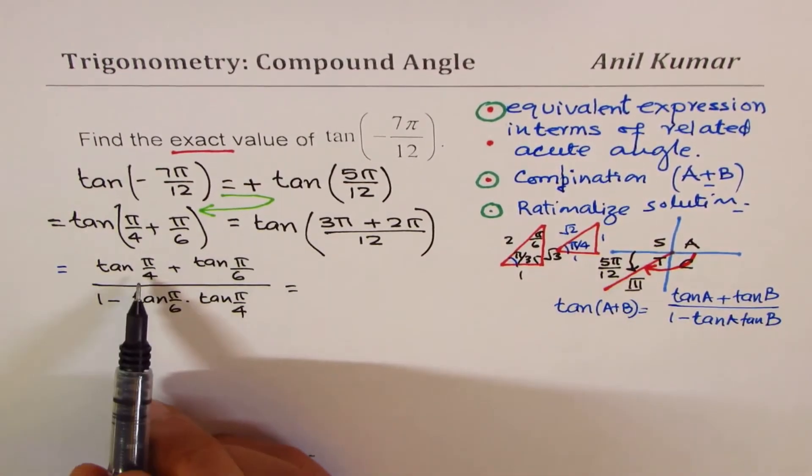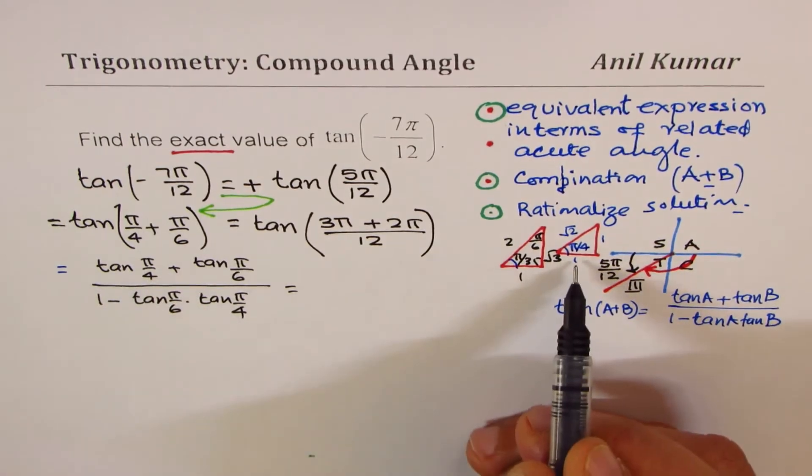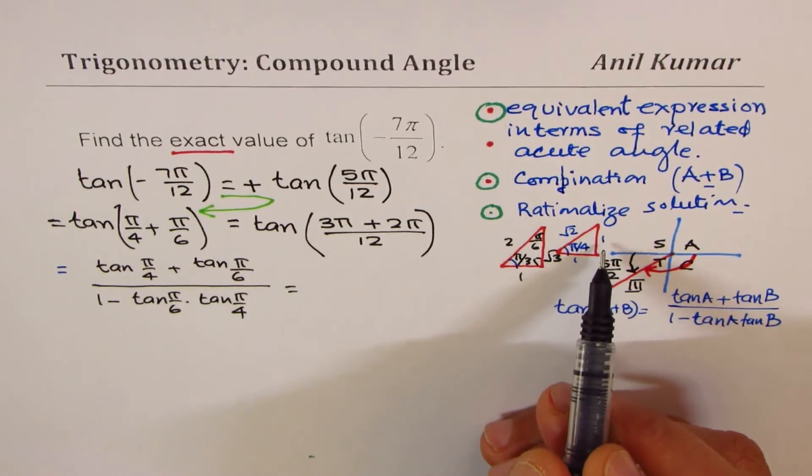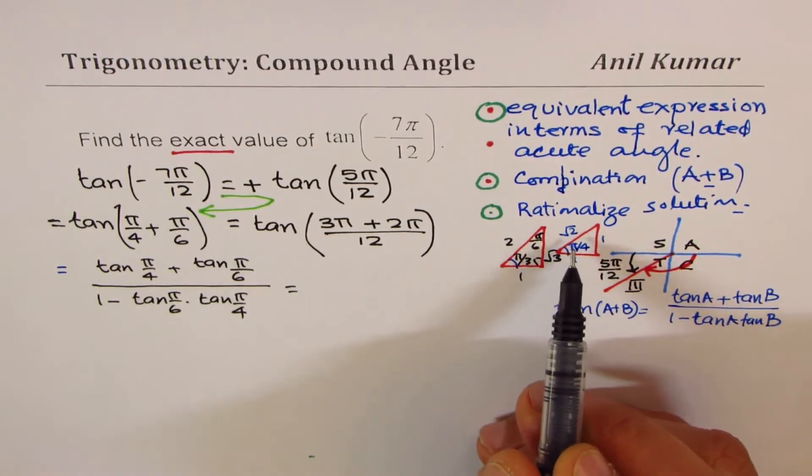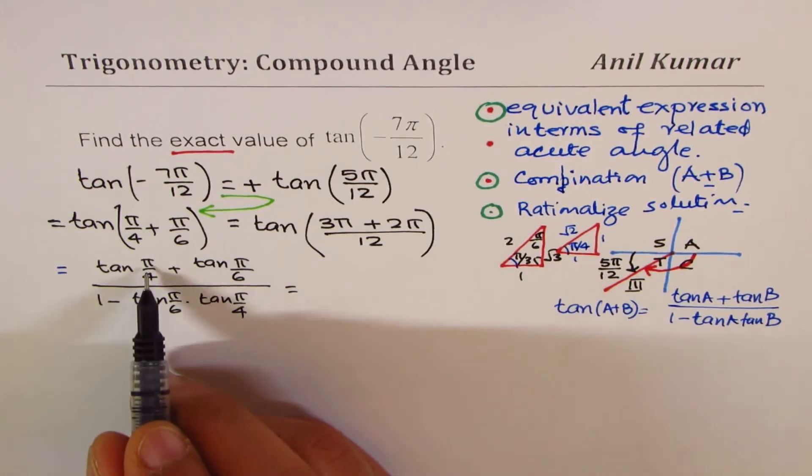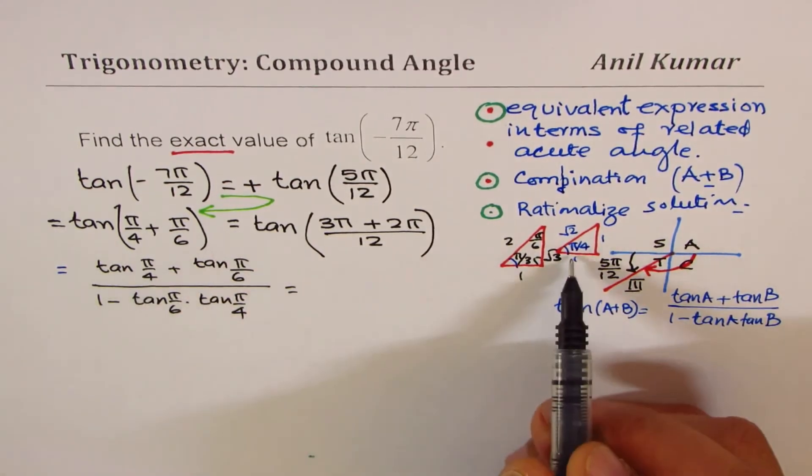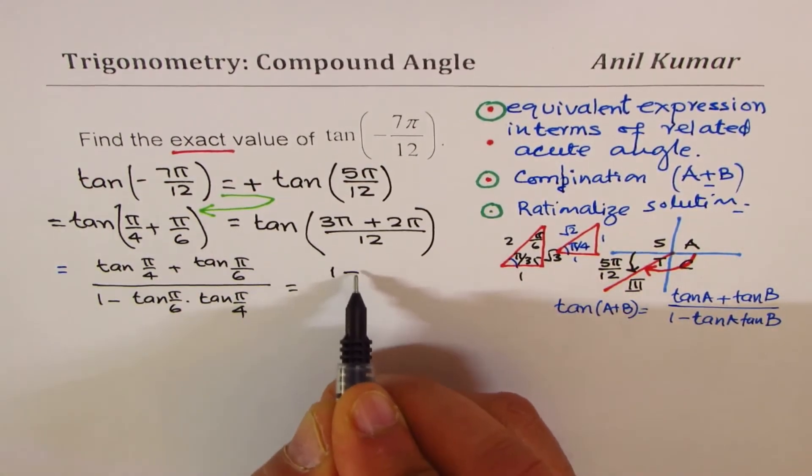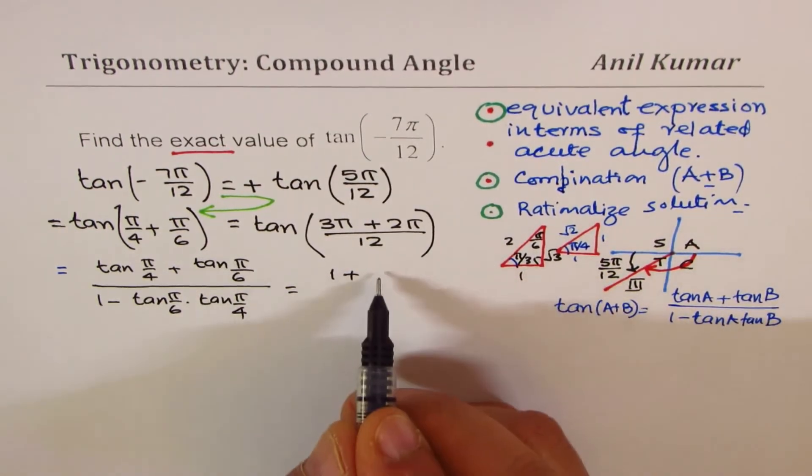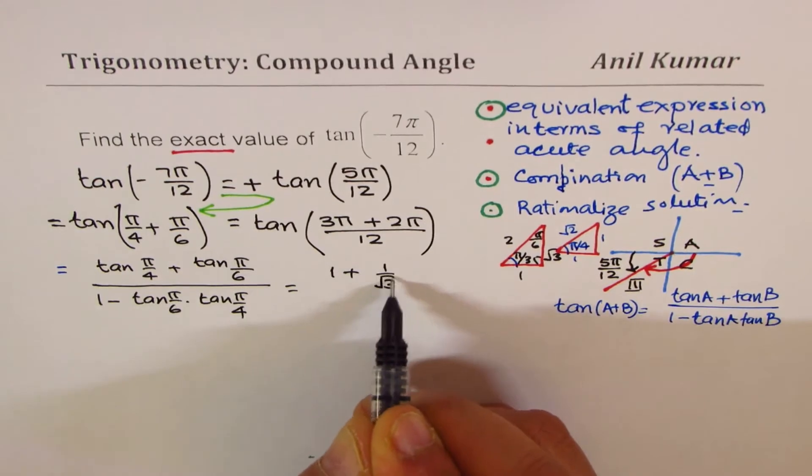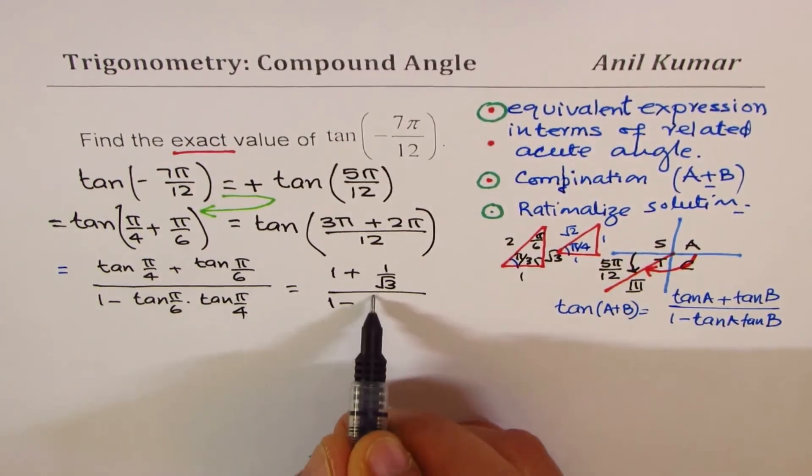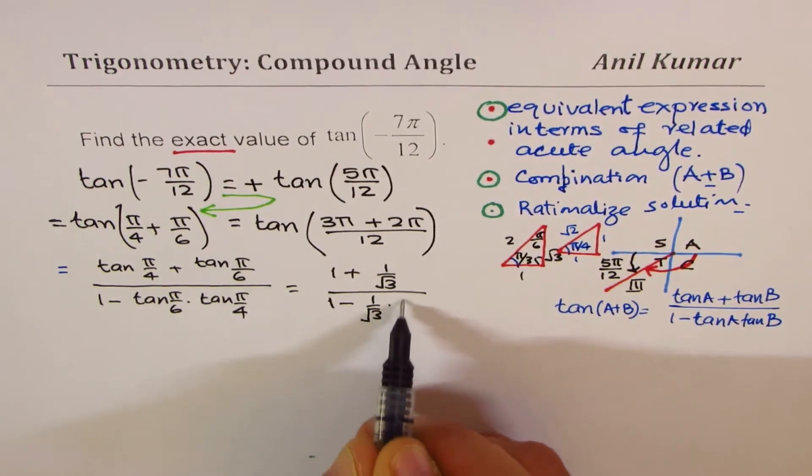So we get this as equals to tan(π/4) plus tan(π/6) over 1 minus product of these two. We'll substitute the values. Tan(π/4) is 1, so it is 1 plus tan(π/6), which is 1/√3. And here you get 1 minus 1/√3 times 1.